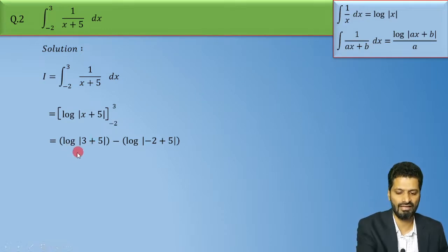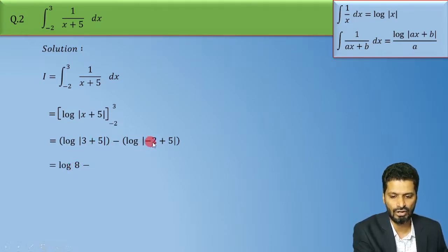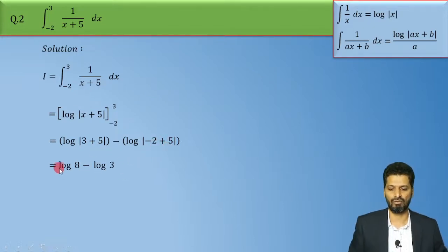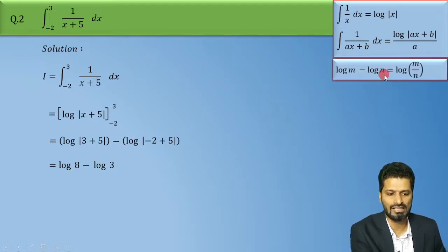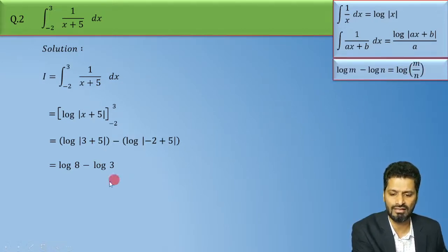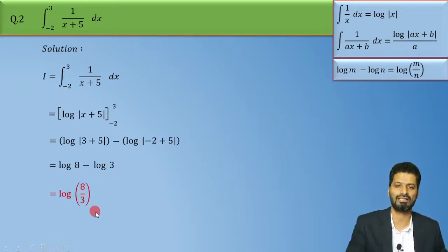Now log of 3 plus 5 will be log 8, then minus and log of minus 2 plus 5 will be log 3 and what is log m minus log n come on? Yes log m minus log n is log of m upon n. Toh overall log 8 minus log 3 will be log of 8 by 3.